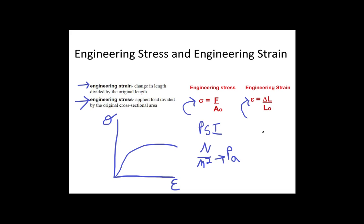Now engineering strain does not have a unit because it's a length divided by a length, so we could have millimeters over millimeters, centimeters over centimeters, etc. So there are no units on engineering strain.